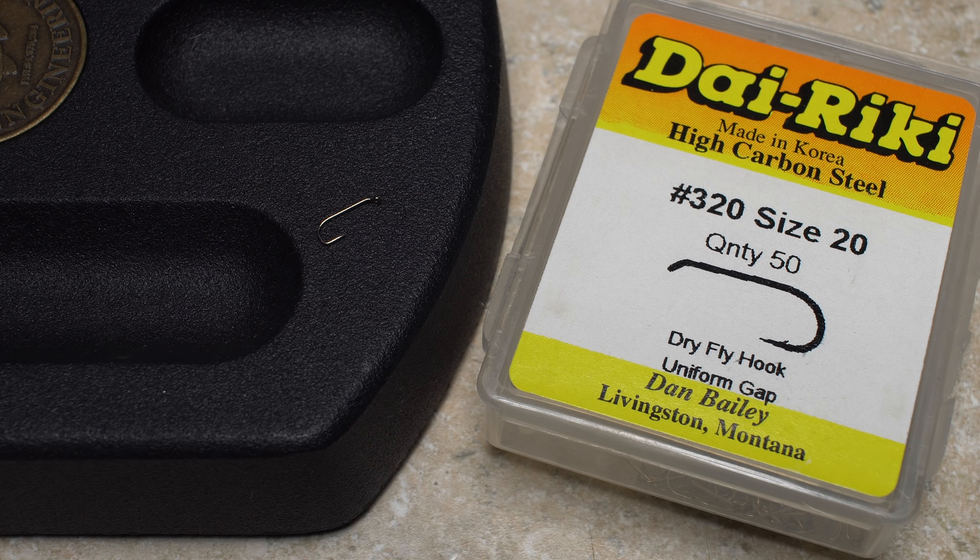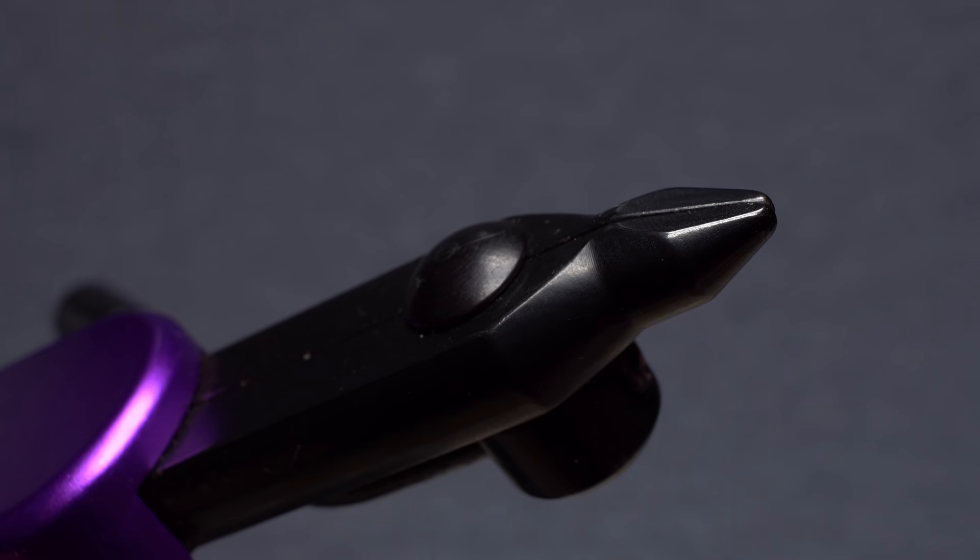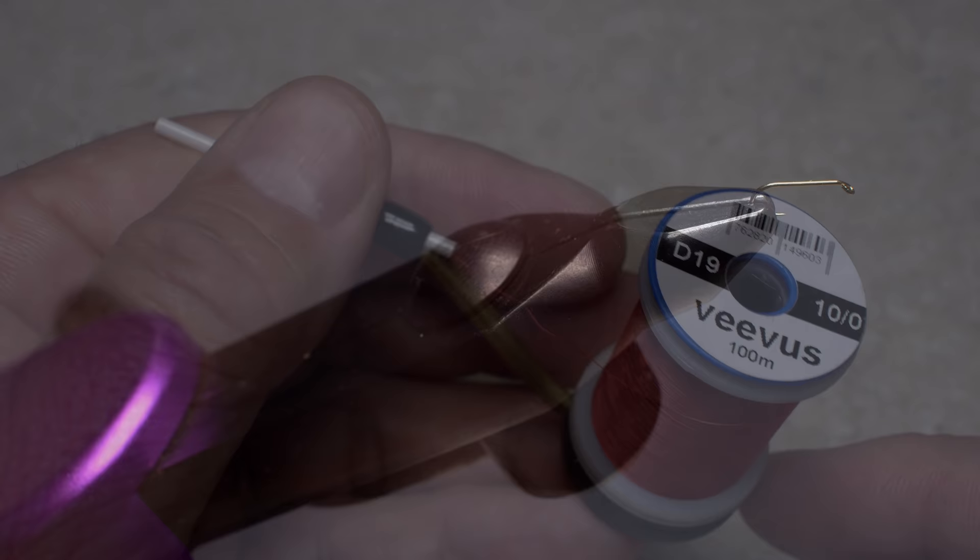For a hook I'm going to use a Dairiki number 320 uniform gap dry fly hook in size 20. Begin by getting the hook firmly secured in the jaws of your tying vise.